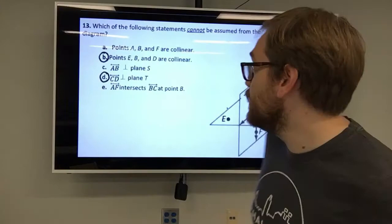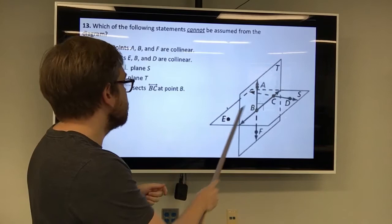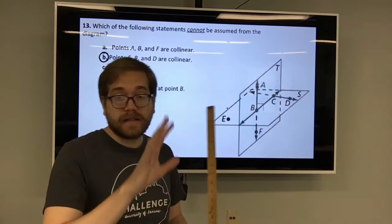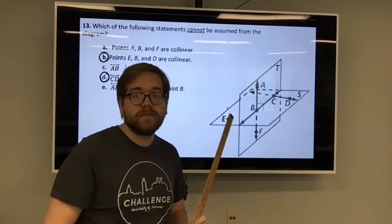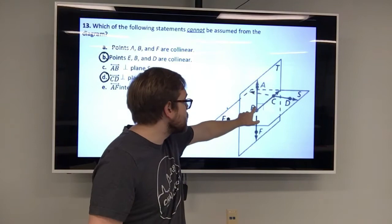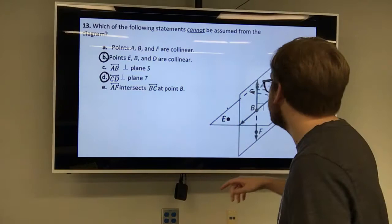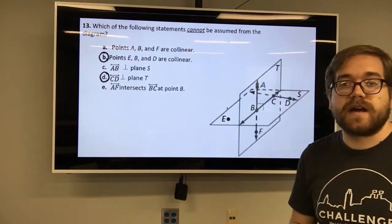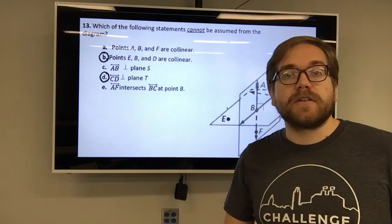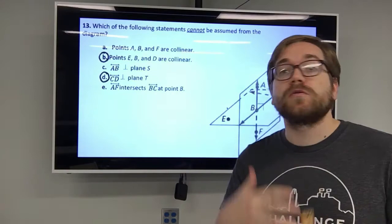Statement E says line AF intersects line BC at point B. I see line AF here and BC here, and I can see them intersecting at point B. Remember, two lines intersect at a point — that's one of our postulates, a known fact. Since B is on both of those lines, it is their point of intersection. So I can assume that from this diagram. When working with diagrams, ask: what do I see, what do I not see, and does this fit with my postulates?